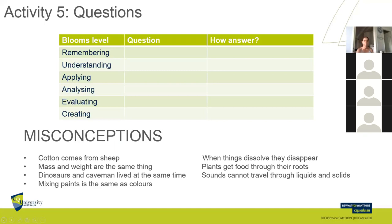Some common science misconceptions include: cotton comes from sheep; mass and weight are the same thing; dinosaurs and cavemen lived at the same time — how many cartoons show that, like The Flintstones; mixing paints is the same as mixing colours; things dissolve when they disappear; plants get food through their roots. A lot of these things are not entirely untrue, but only partially true. My wife had written on her pencil box: 'Beware of half truths — you may have the wrong half.' Misconceptions may not be entirely wrong, but if they're partially incorrect, what we build on them will continue to be more incorrect.